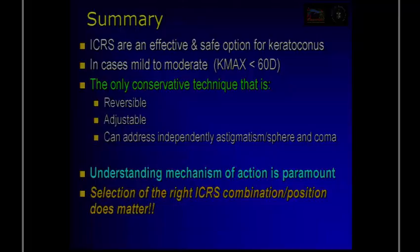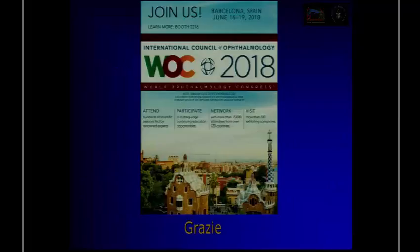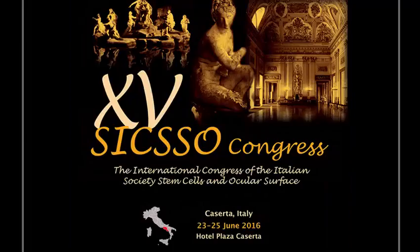It is also important to decide to correct astigmatism with a toric IOL. If you use a toric IOL, you have to place it on the right axis, otherwise it is useless. Before leaving, I want to invite you to save the date: June 2018, the World Ophthalmology Congress in Barcelona. You are all invited. Thank you.